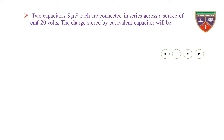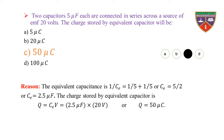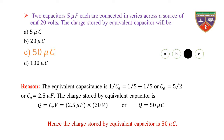Two capacitors of 5 microfarad each are connected in series across a source of EMF 20 volts. The charge stored by the equivalent capacitor will be — option A: 5 μC, option B: 20 μC, option C: 50 μC, option D: 100 μC. Key is 50 μC; the correct option is C. Reason: 1/CE = 1/5 + 1/5, so CE = 2.5 μF. Q = CE × V = 2.5 × 20 = 50 microcoulombs.